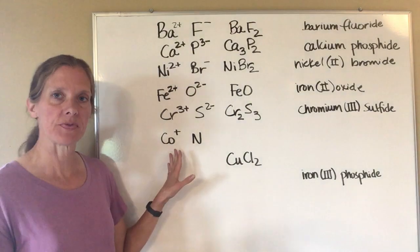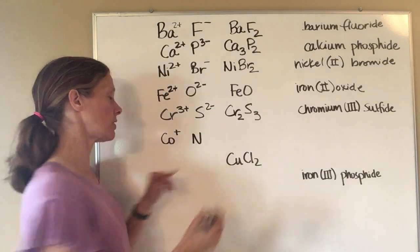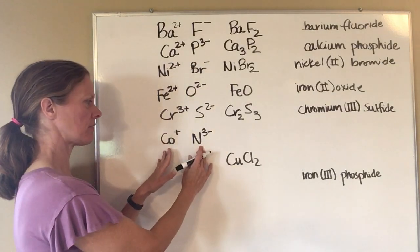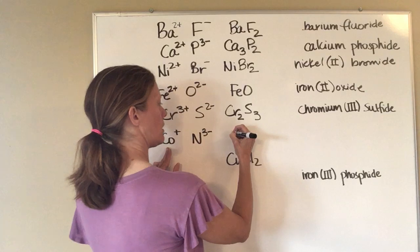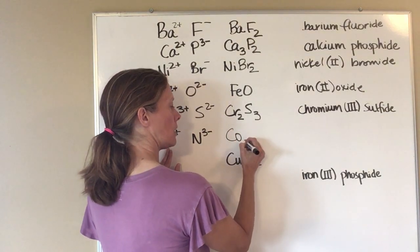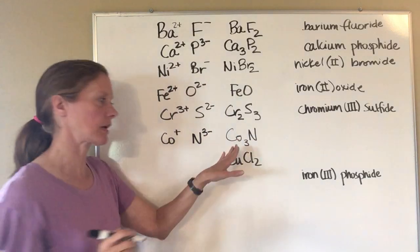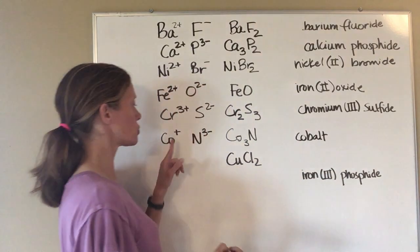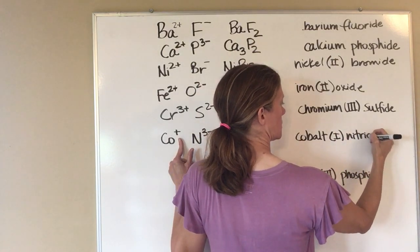Cobalt and nitrogen: look at the periodic table to find nitrogen's charge — it's negative three because of the column it's in. To balance, I need three cobalts for one nitrogen, giving Co₃N. Make sure that's a lowercase 'o' so it doesn't look like carbon and oxygen — it's cobalt. The charge on each cobalt works out to positive one, so this is cobalt(I) nitride.